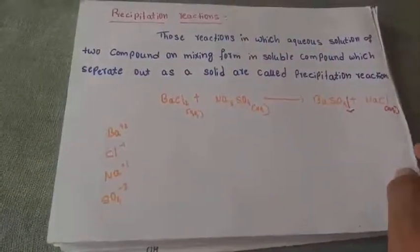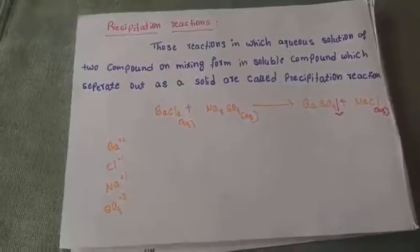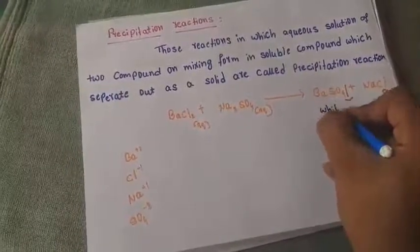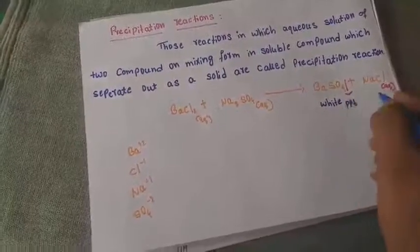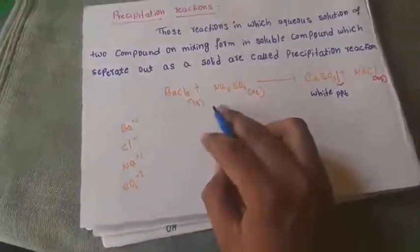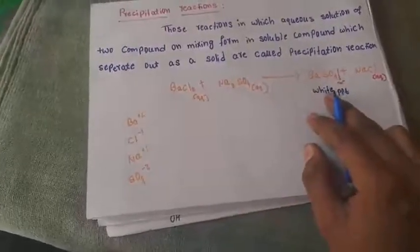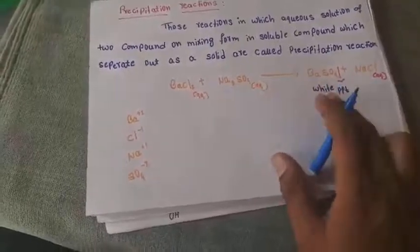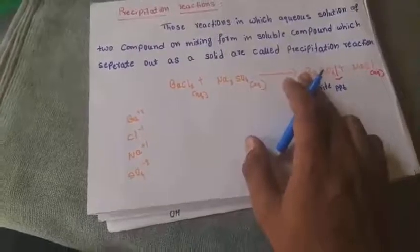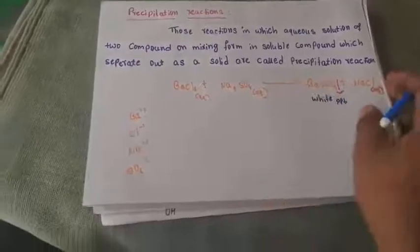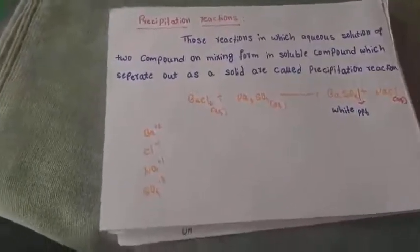According to the definition, aqueous solutions of the two compounds — BaCl₂ and Na₂SO₄ — on mixing form the insoluble compound BaSO₄ (barium sulfate), which separates out as a solid. This is the precipitate. BaSO₄ forms a white-colored precipitate. By observing that white-colored solid we confirm the precipitate, whose name is barium sulfate. This is one example of a precipitation reaction.